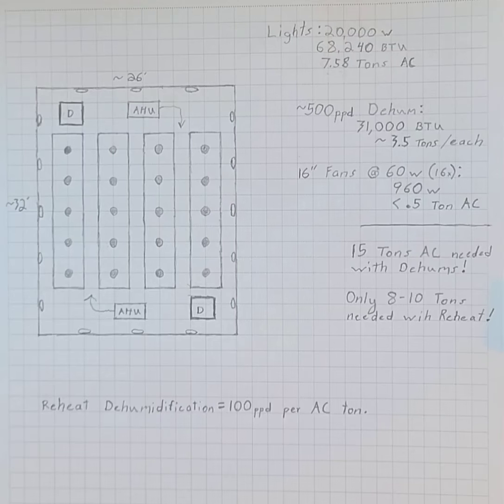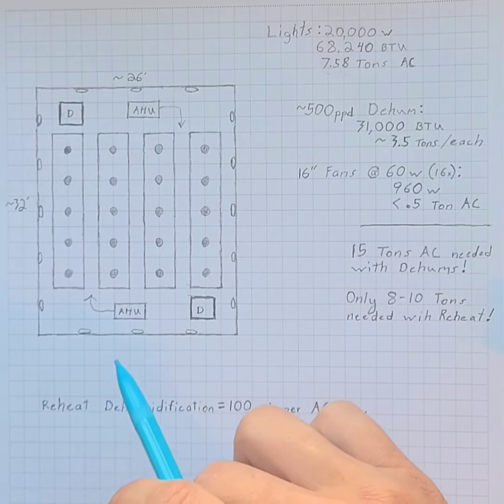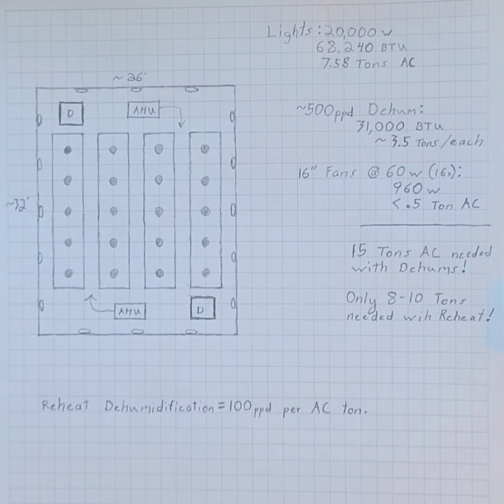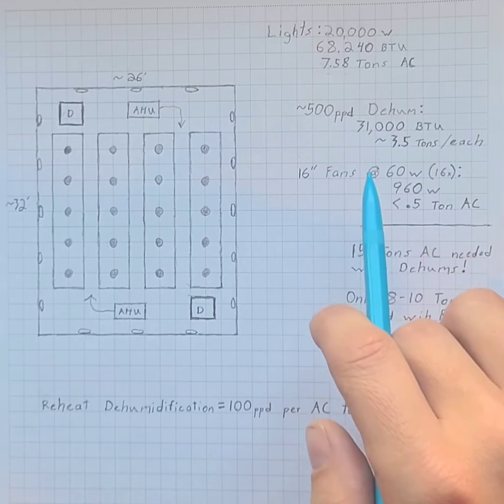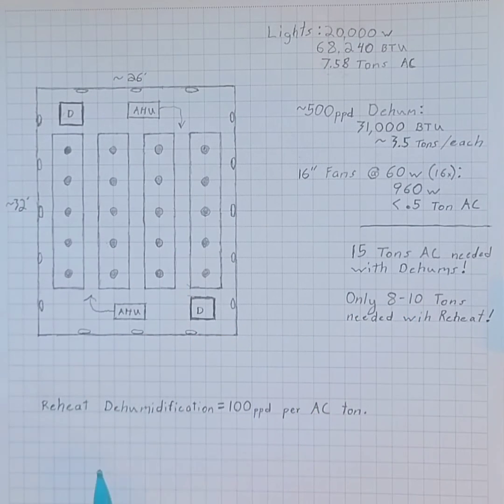If Cannabis Mechanical was to go in there and design this room or fix this room, we would actually be turning off those dehus or not installing them in the first place because those two air handlers, those two five ton units, are capable of doing a thousand pints per day between the two of them, meeting that dehu demand that the dehumidification company quoted you on. So for just 10 tons of cooling, you can keep this whole room under control with just reheat dehumidification.